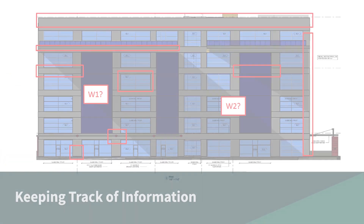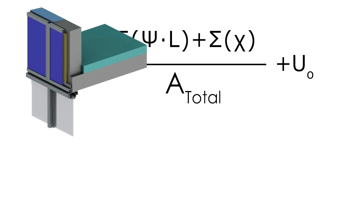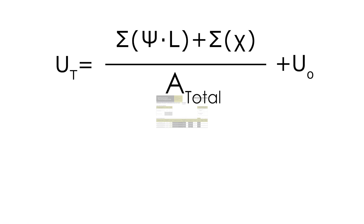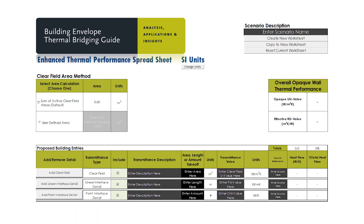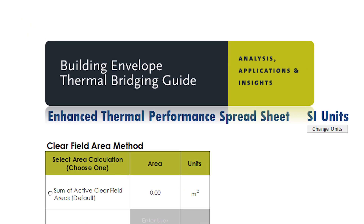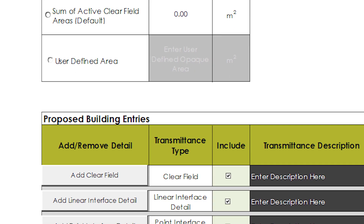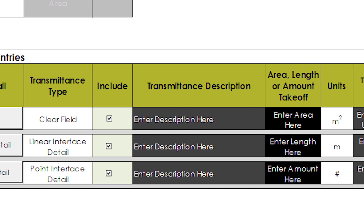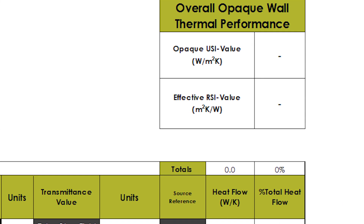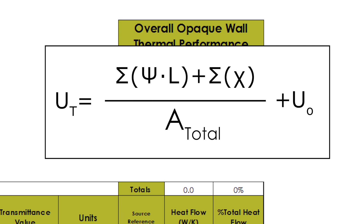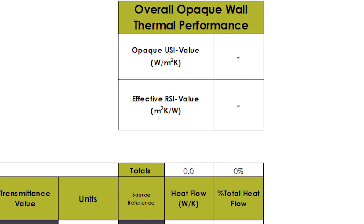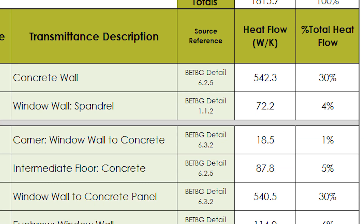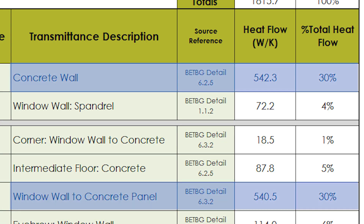During the calculation process, you may choose to keep track of the calculations, takeoffs, and values in many ways. However, a helpful tool for carrying out the calculations is available: the Building Envelope Thermal Bridging Guide spreadsheet. This spreadsheet allows the user to input clear field, linear, and point transmittance values and quantity takeoffs, and provides the overall effective R and U value based on the thermal bridging equation. It also provides the percentage contribution of each assembly to the overall heat flow, which helps recognize which details need more attention for refinement.